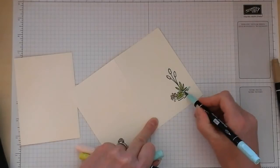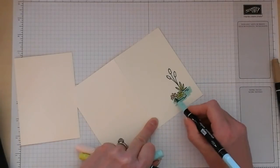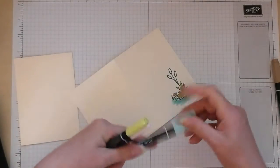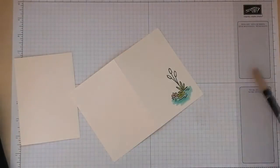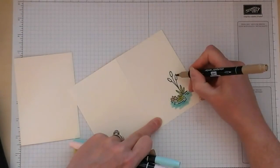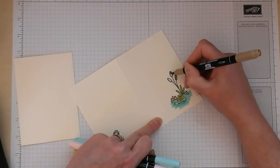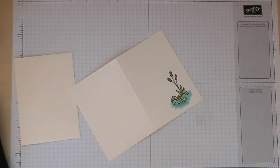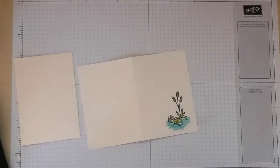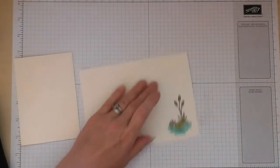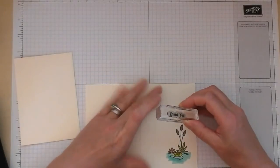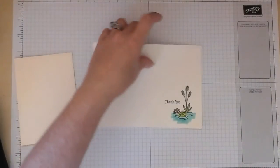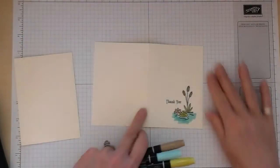For the water I'm just going to very quickly just colour in like that and that's using pool party marker from the Subtles pack and then I'm going to finish up here doing the bulrushes with crumb cake. Okay to stamp my thank you... so all very pretty if a little flat.